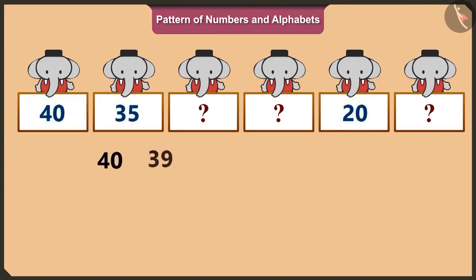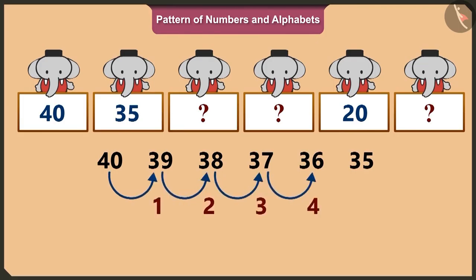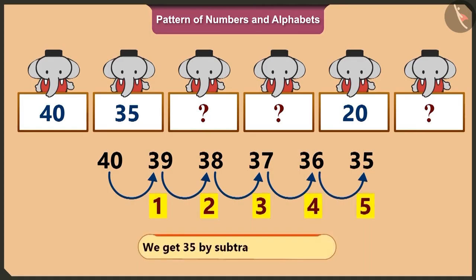Hence, we have forty, thirty-nine, thirty-eight, thirty-seven, thirty-six, thirty-five. Which is one, two, three, four, five. On subtracting five from forty, we get thirty-five.